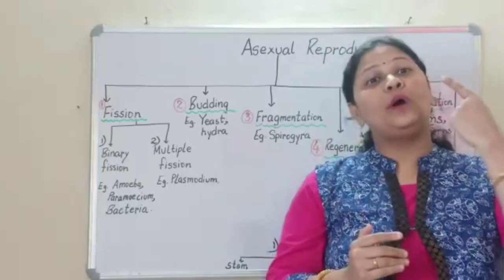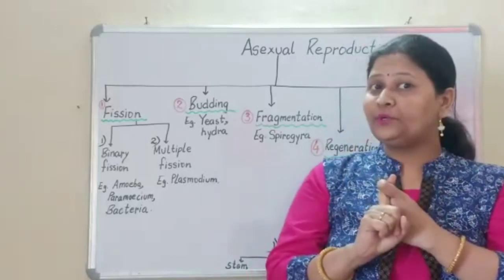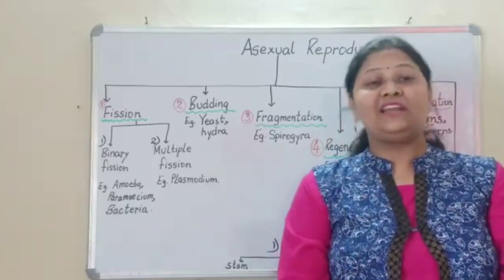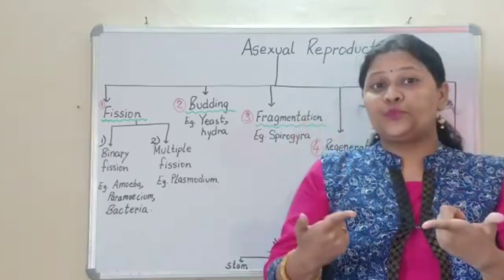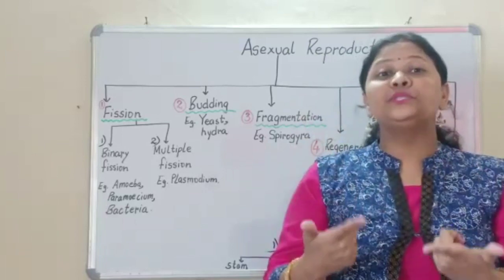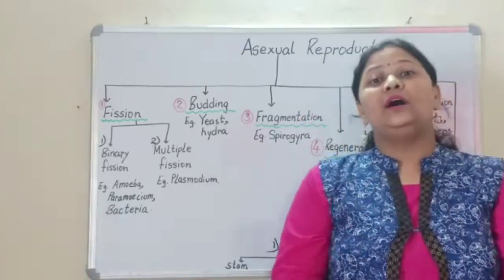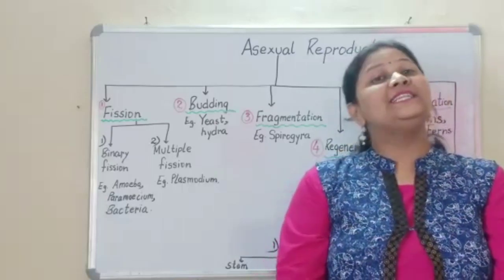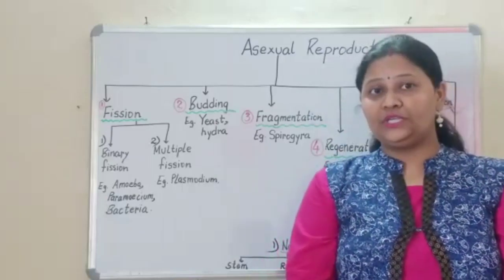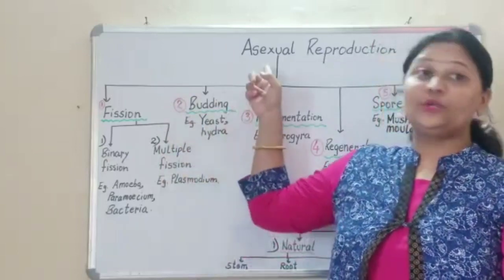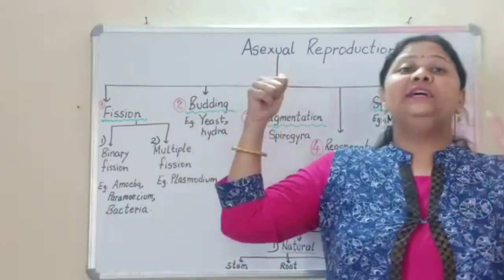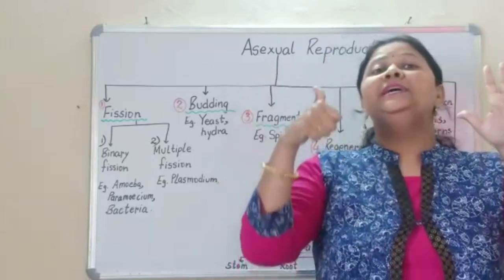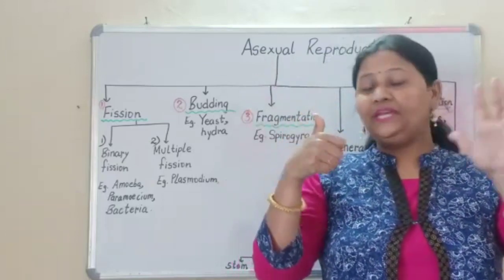In asexual reproduction, only one parent is involved. There is no fusion of male and female gametes, and the offspring produced are genetically and morphologically identical to their parents. Now today we are going to study about asexual reproduction. There are mainly six types of asexual reproduction which we will be understanding one by one.